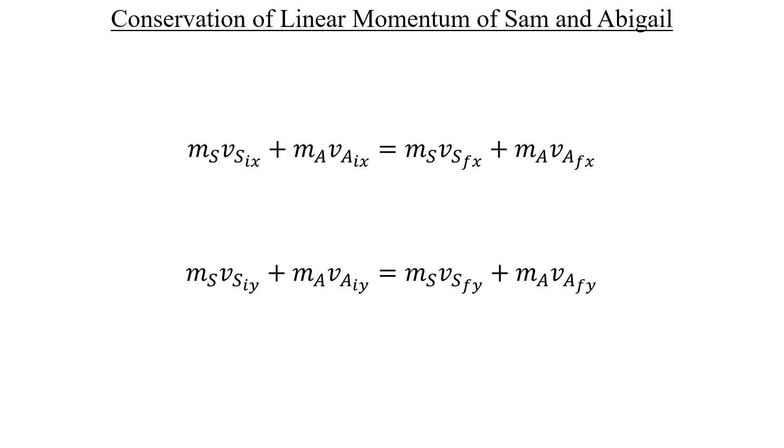Here's the conservation of linear momentum applied to Sam and Abigail in the x and y directions. In the top equation, we have the initial momenta of both friends along the x direction on the left, and the final of both on the right. And the same idea is applied for the y direction in that bottom equation.